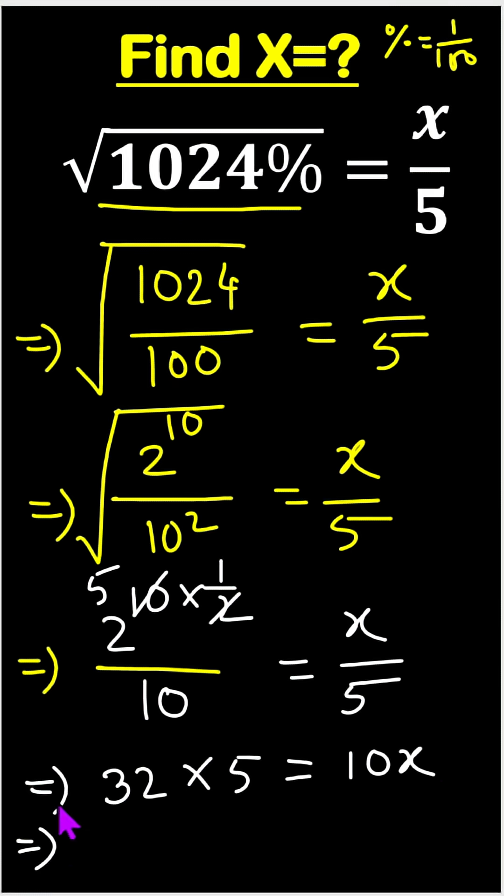Now x equals to 32 times 5 divided by 10. 5 divided 5 is 2, 32 divided 2 is 16. So our answer is 16.